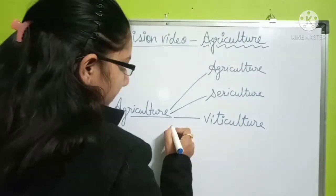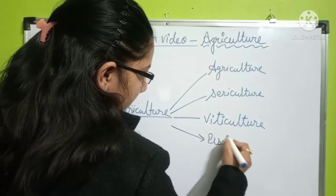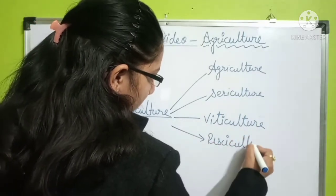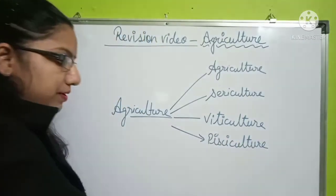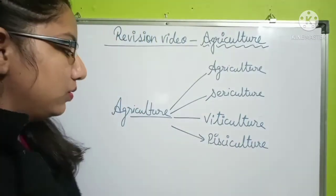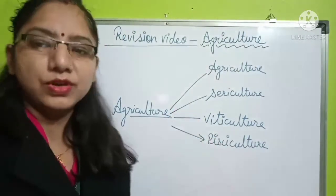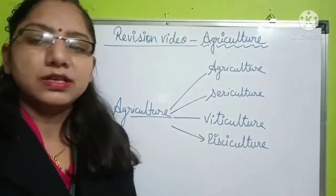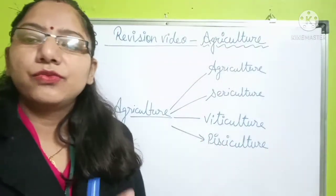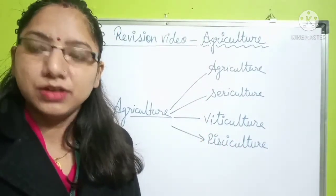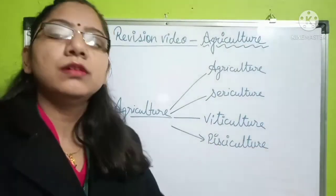Pisciculture is fish culture or cultivation. The cultivation of fish, fish breeding, and fishing — everything is included in pisciculture.